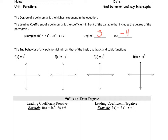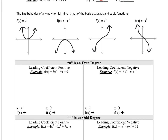Now, end behavior. The end behavior of any polynomial function mirrors that of these basic quadratic and cubic functions below. A basic x squared goes to the origin and looks like a U shape. A basic negative x squared goes to the origin and looks like an upside-down U. A basic cubic function goes to the origin and looks like an S curve. And a basic negative cubic function goes to the origin and looks like an inverted S. We can find the end behavior of any polynomial function if we know what these four pictures look like.